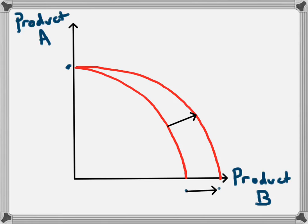This diagram can also be used to explain other concepts, which we will look at in other videos. Some examples of those are opportunity cost, and we could also look at this diagram to explain the gains of trade if we have free trade between two countries.